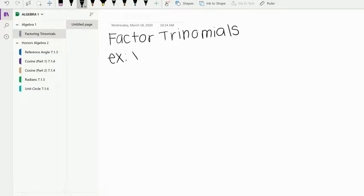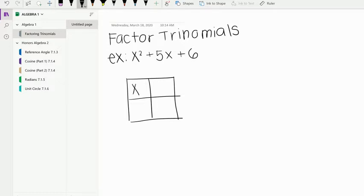We're going to take a look at our first trinomial, x squared plus 5x plus 6. What you're going to do is create your box, and remember we take the first term, which is x squared, that goes in the first box. We take our last term, which is 6, and that goes in the last box.